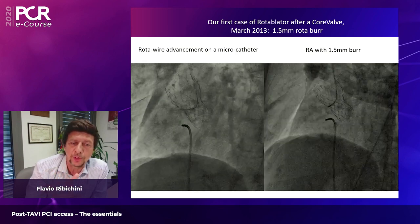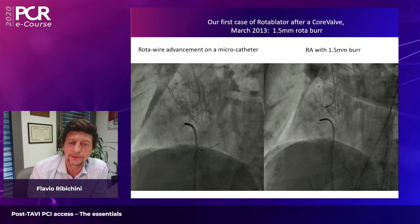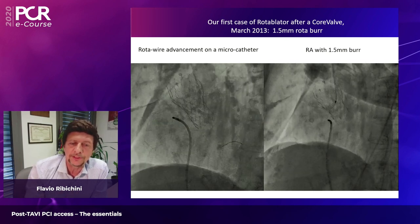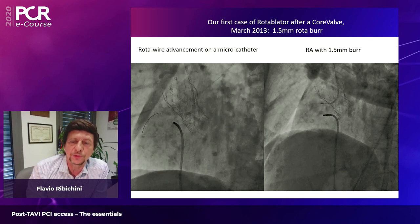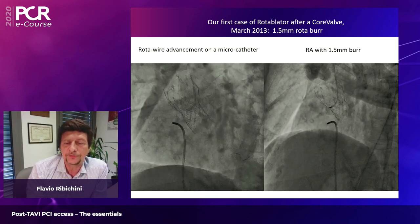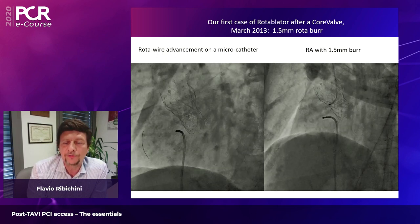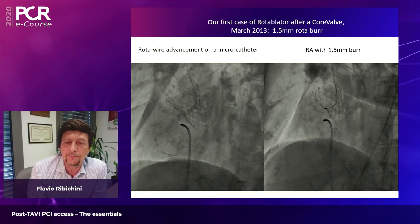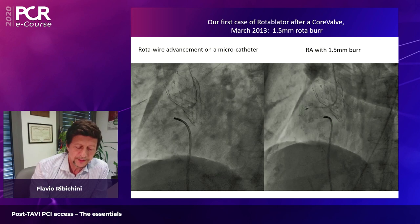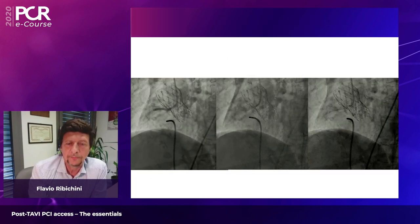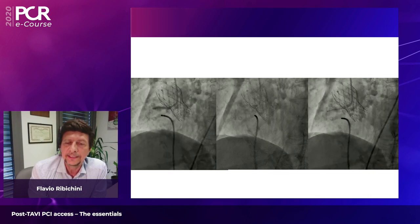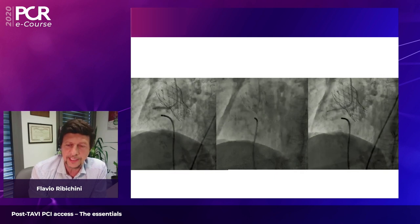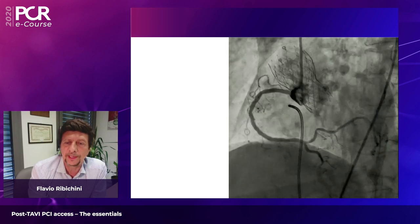The first thing was to cross with a pilot 50 wire, then put a micro catheter, retrieve the pilot and use the micro catheter as a rail to advance the rota wire. Then a regular rotational atherectomy was performed with a 1.5 burr on this bulky calcification of the right coronary artery. The rest was a regular procedure: balloon dilatation and drug-eluting stent navigation through the struts of the valve, with stent positioning yielding a good final result.